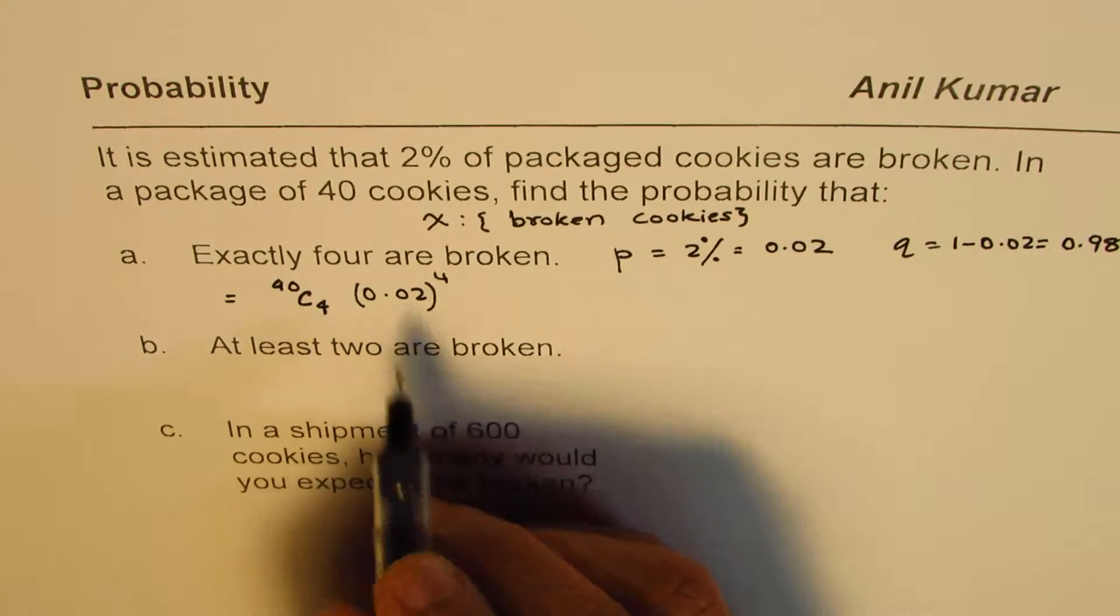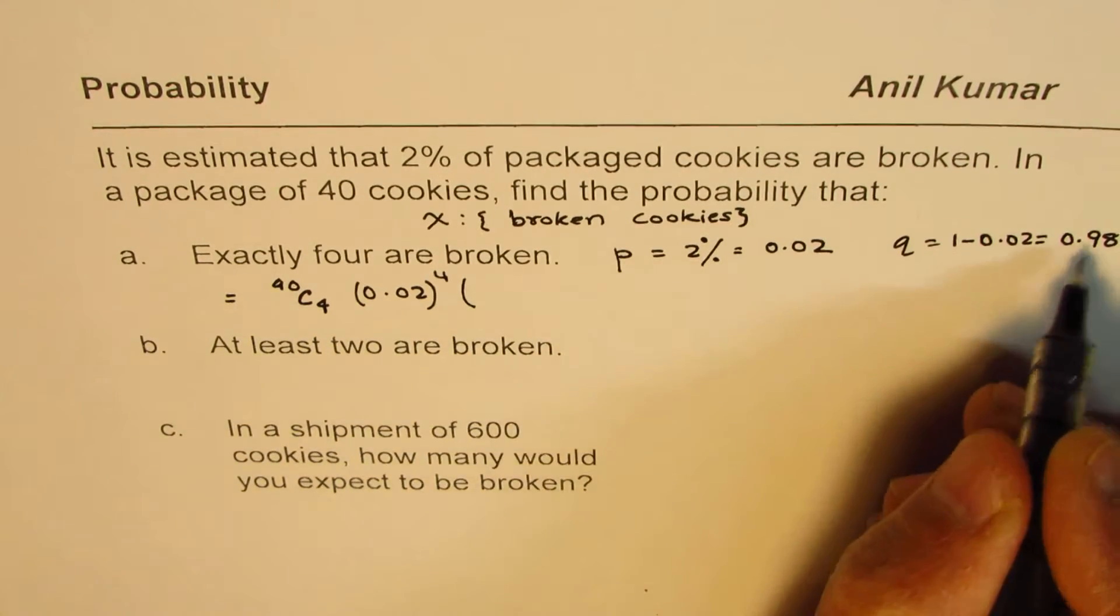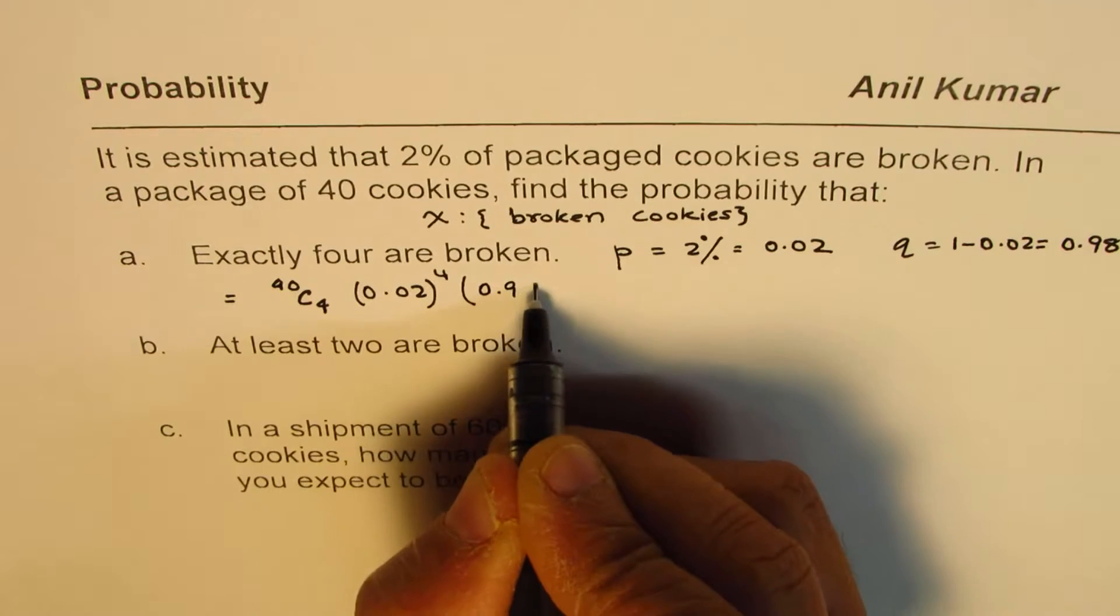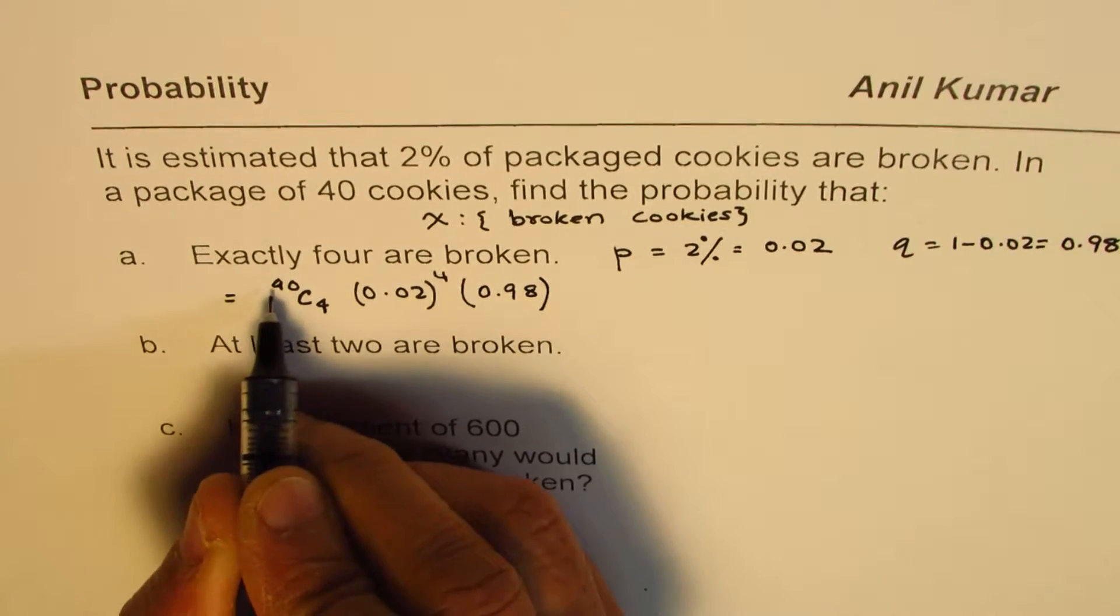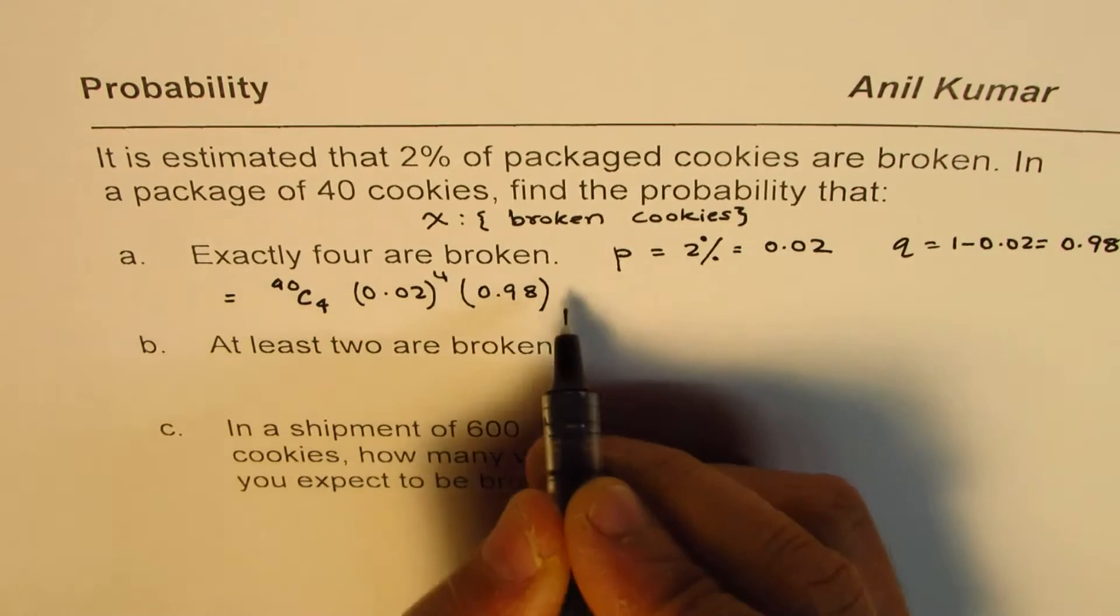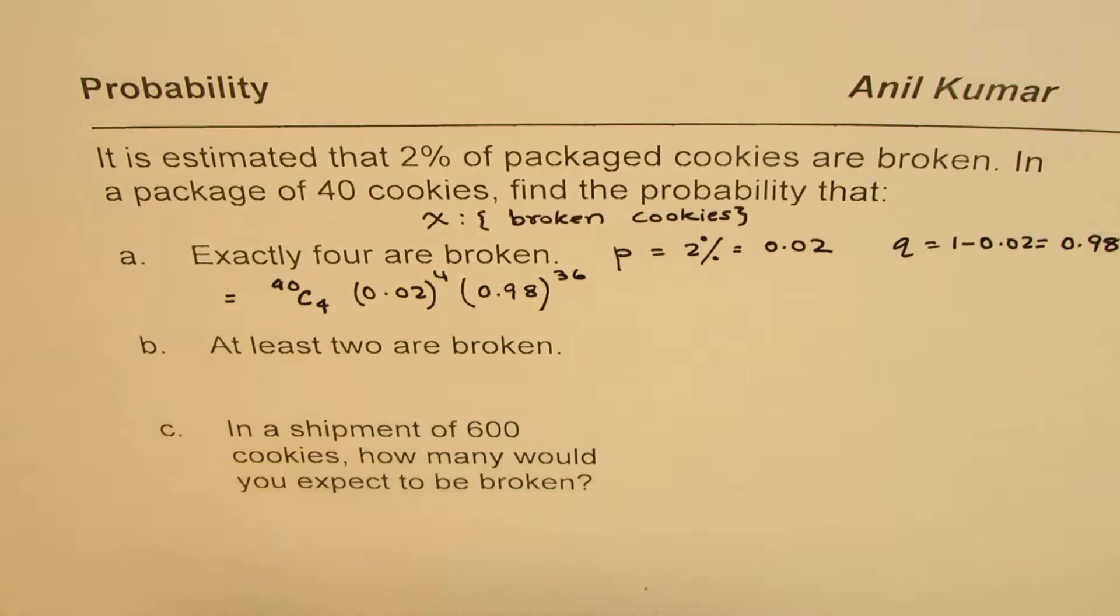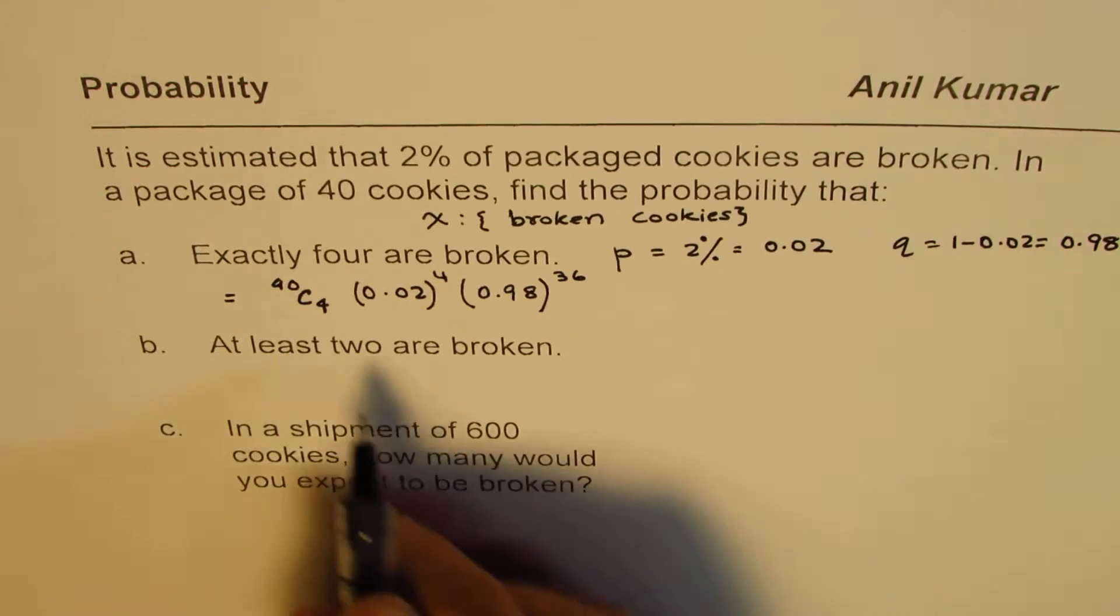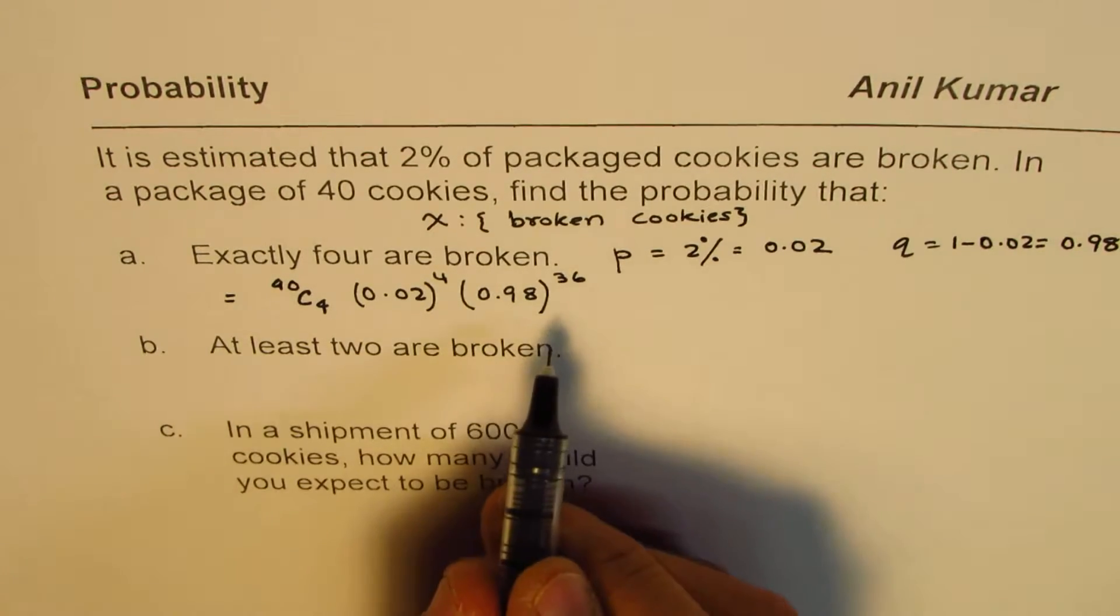In this case, so many are broken, not broken with a probability of 0.98 each. 40 take away 4 is 36. So that becomes your solution. You can always use a calculator to calculate this value.